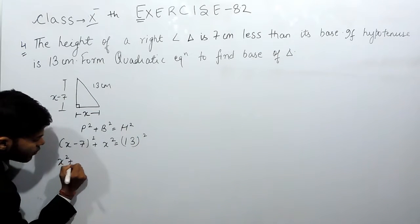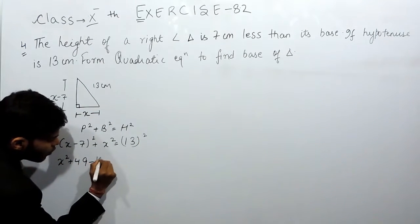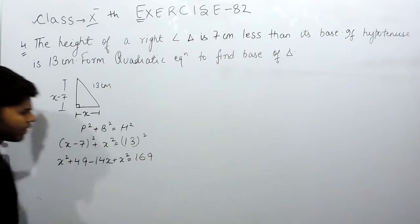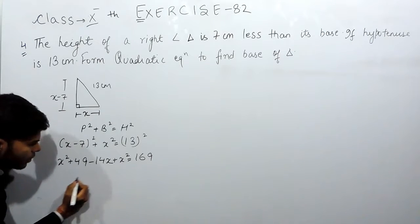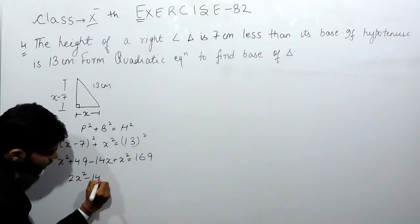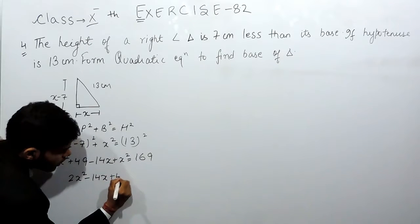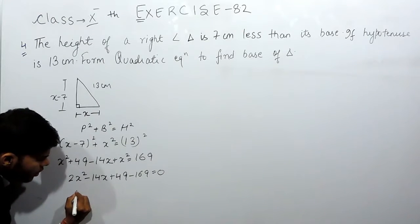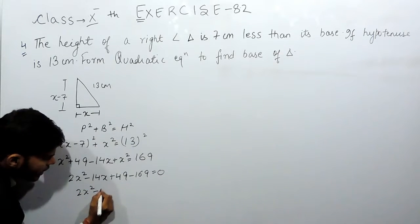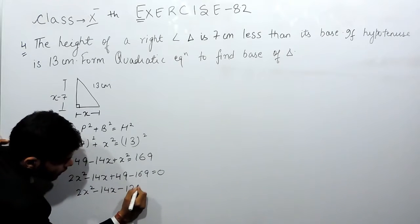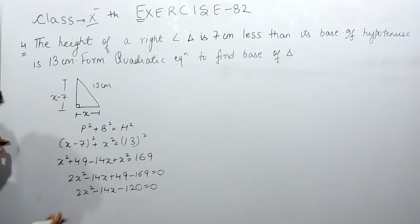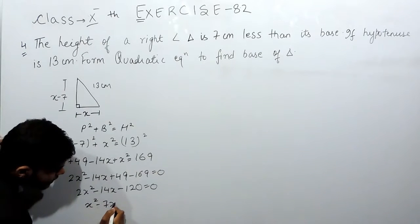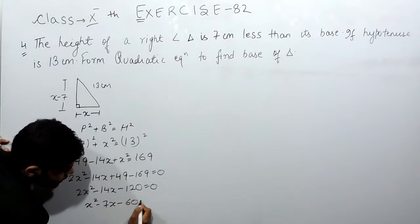x square plus 49 minus 14x plus x square equals 169. So this will be 2x square minus 14x plus 49 minus 169 equals 0. 2x square minus 14x minus 120 equals 0. We can divide this whole equation by 2. x square minus 7x minus 60 equals 0.